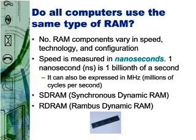RAM speed is often expressed in nanoseconds or megahertz. One nanosecond, or ns, is one billionth of a second. In the context of RAM speed, lower nanosecond ratings are better because it means the RAM circuitry can react faster to update the data it holds. For example, eight nanoseconds of RAM is faster than ten nanoseconds of RAM.